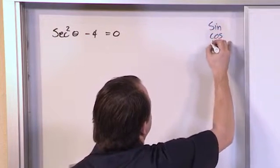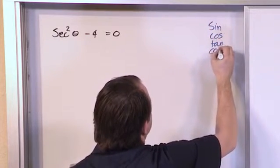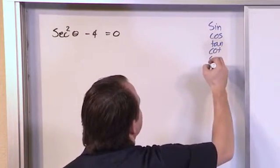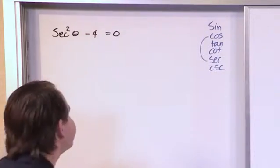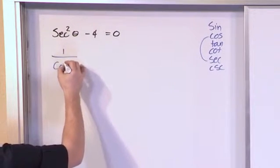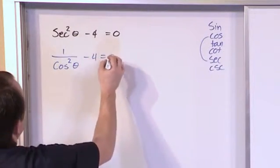So we have sine, cosine, tangent, cotangent, secant, cosecant. And we see that secant goes along with cosine. So secant squared is going to be 1 over cosine squared theta minus 4 is equal to 0.